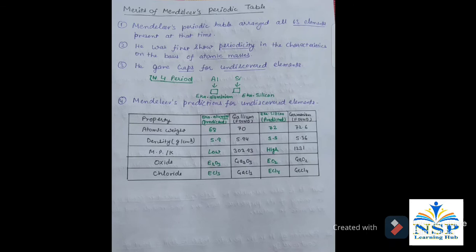He gave some gaps for undiscovered elements. For example, in fourth period, below aluminum, he showed a gap for eka-aluminum. Similarly, below silicon, he showed a gap for eka-silicon.